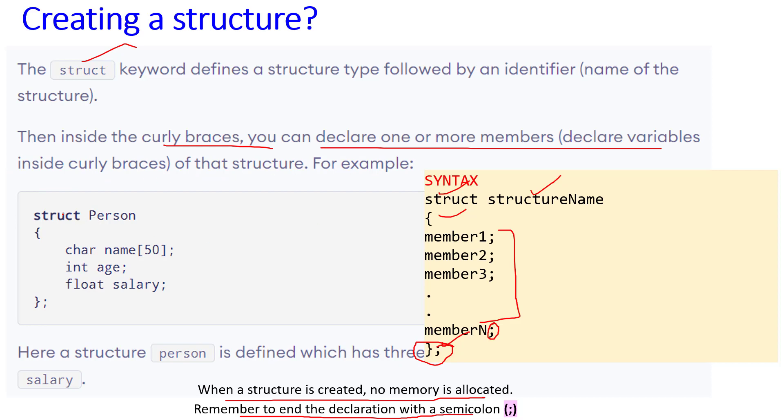For example, struct Person: opening curly braces, character name, integer age, float salary. The salary is in decimal value. Closing the curly braces and closing the structure with a semicolon. Here, a structure Person is defined which has three components: one in character, one integer, one float.